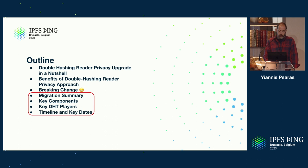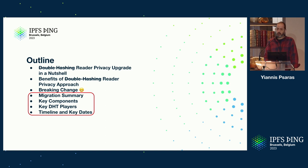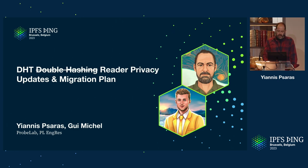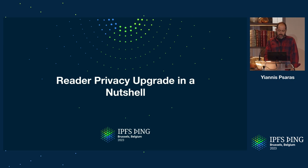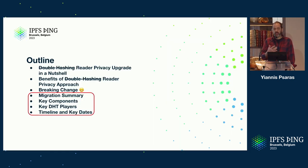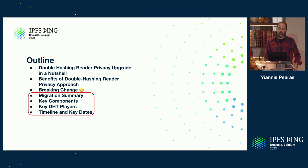We need to get some of these details correctly. This has been called double hashing for quite some time now since the starting of the design, which was primarily masterminded by Guillaume, who is the other presenter and author of this presentation. But the double hashing as a term might not be very accurate, so we might be changing the name a little bit. Generally, it is a reader privacy upgrade — it doesn't touch the writer or publisher privacy of the DHT.